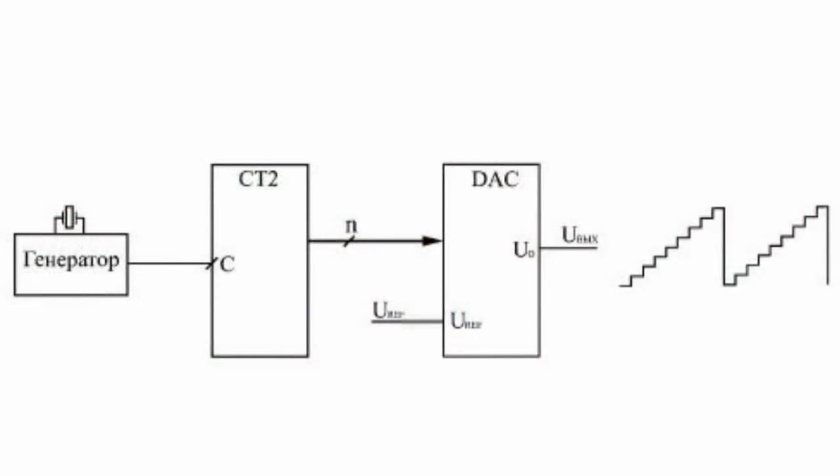In the simplest case, a standard binary counter can be used as an input source code for the DAC. The DAC output voltage will increase with each clock pulse, forming sawtooth outputs. The duration of each step is equal to the period T of the clock generator, and the period of the entire output signal is equal to 2 raised to the power of N multiplied by T.